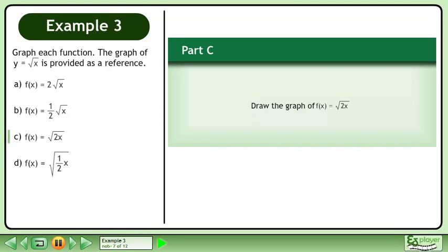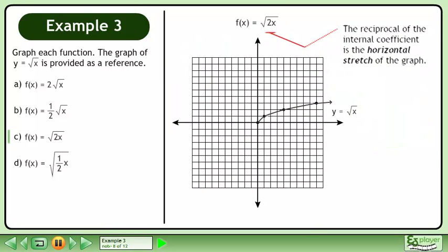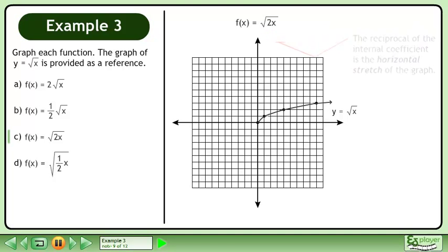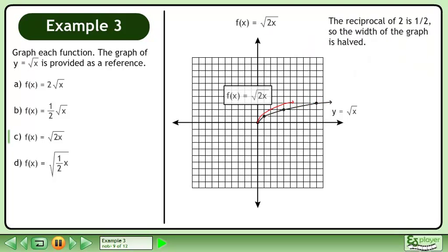In Part C, we'll draw the graph of f equals the square root of 2x. The reciprocal of the internal coefficient is the horizontal stretch of the graph. The reciprocal of 2 is 1 half, so the width of the graph is halved.